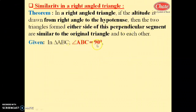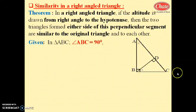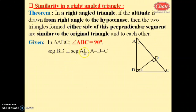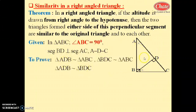Given: in triangle ABC, angle ABC equals 90 degrees. We draw triangle ABC where angle ABC is a right angle. BD is perpendicular to hypotenuse AC such that A-D-C. We have to prove that the two triangles from either side of this perpendicular line segment — triangle ADB and triangle BDC — are similar to original triangle ABC, and that all three right angle triangles are similar to each other.